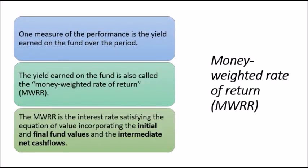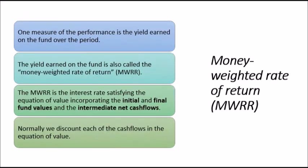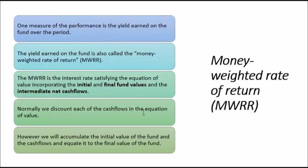Moving forward, we know that MWRR is the interest rate satisfying the equation of value. Now, this equation of value actually incorporates the final value, the initial period, and all the values in between are known as the net cash flows. Normally, we discount each of the cash flows in the equation of value. Of course, this is the process of present value. However, we will accumulate the initial value of the fund and the cash flows and equate it to the final value of the fund. So pretty much summarizing everything I just stated here.